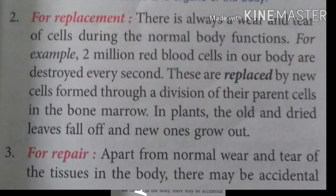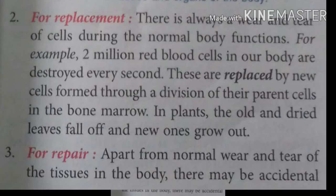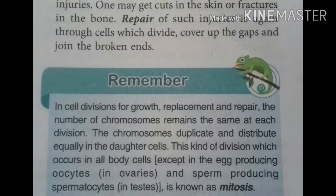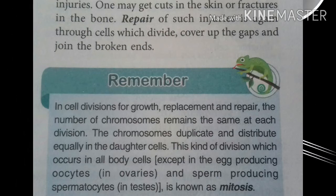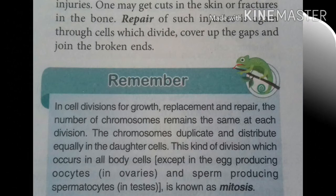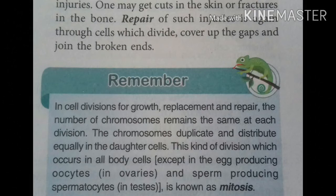The third need is for repair. Apart from normal wear and tear of tissue in the body, there may be accidental injuries. One may get a cut in the skin or a fracture in the bone. Repair of such injuries is again through cells which divide, cover up the gap, and join the broken ends. For example, if our skin is cut, it will be normal in one week because the cells repair the damage.